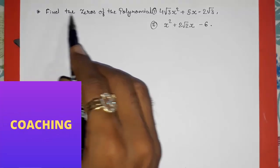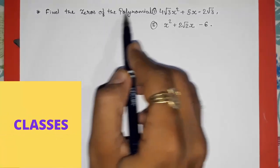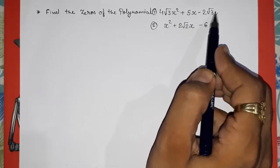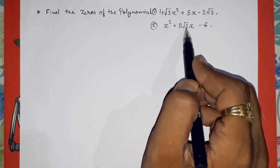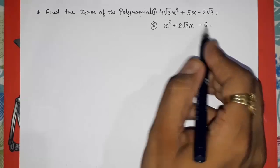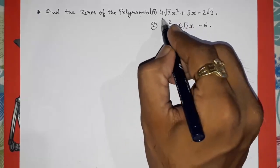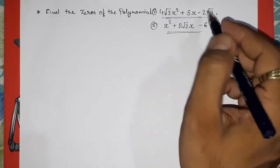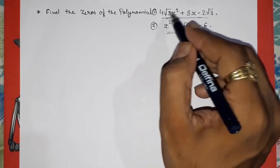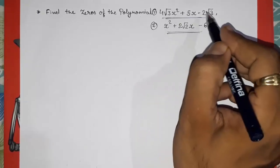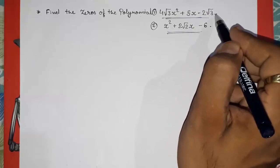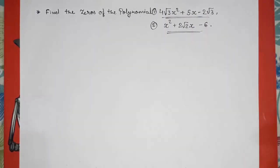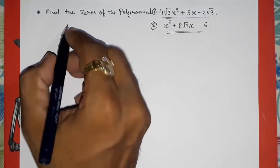Hello friends, today we are going to find the zeros of the polynomials 4√3x² + 5x - 2√3 and x² + 2√2x - 6. I selected these questions because generally students have doubts when roots or irrational numbers appear in this type of question. What we have to do is the same as what we do in simple questions.